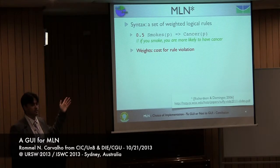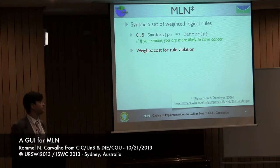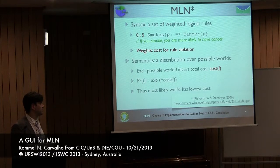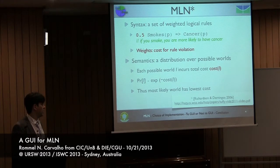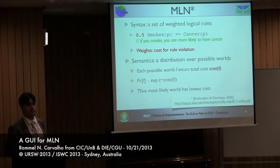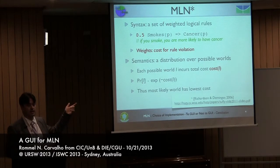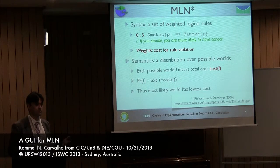For instance, if a person smokes, it's more likely that this person has cancer. You have a weight associated to it, like 0.5. The semantics is a distribution over possible worlds. Each world has a cost associated to it, and it's proportional to the exponent of the negative value of that cost. So basically if the cost is really high, then the probability is really low — if you've violated a lot of rules, the probability is going to be low.